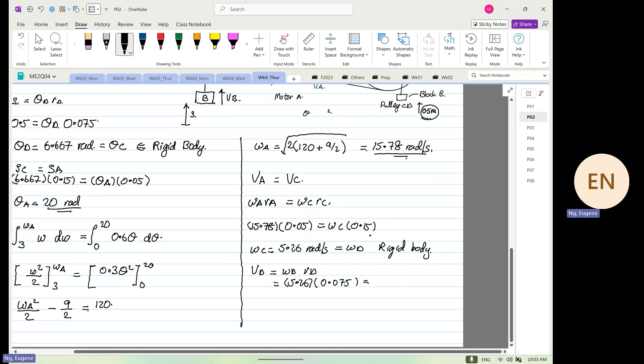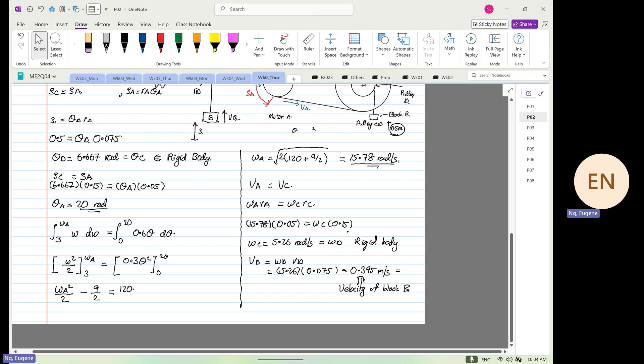And finally, 5.26... My calculator says index error. 0.395 meters per second. And this is equal to the velocity of block d.